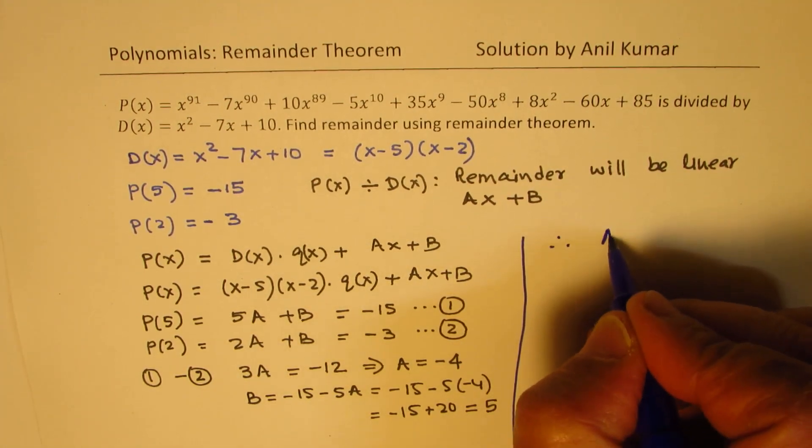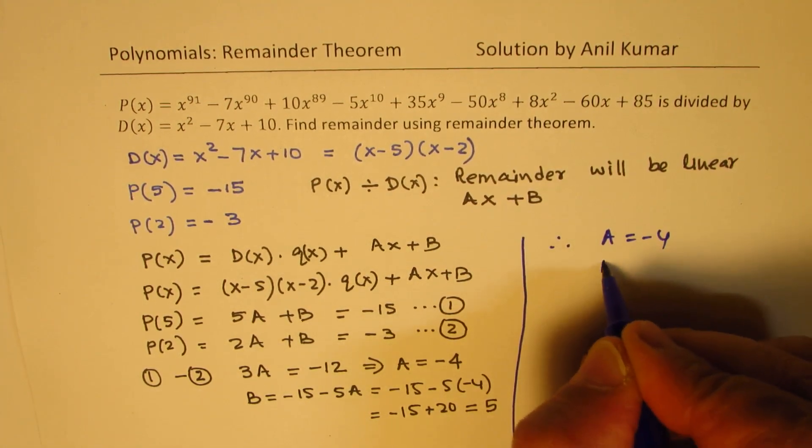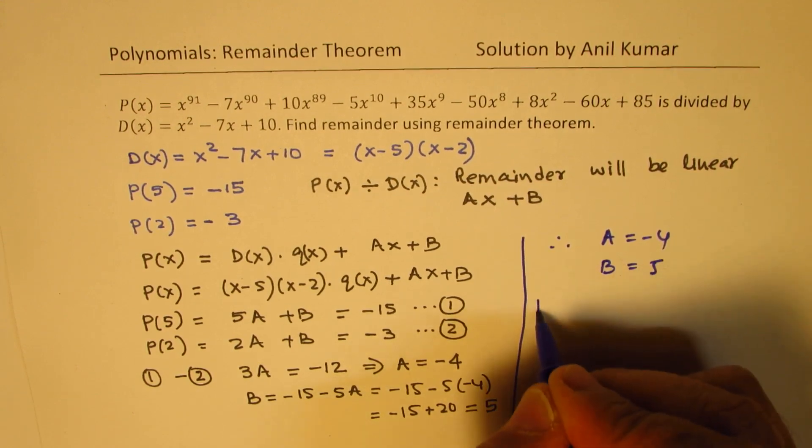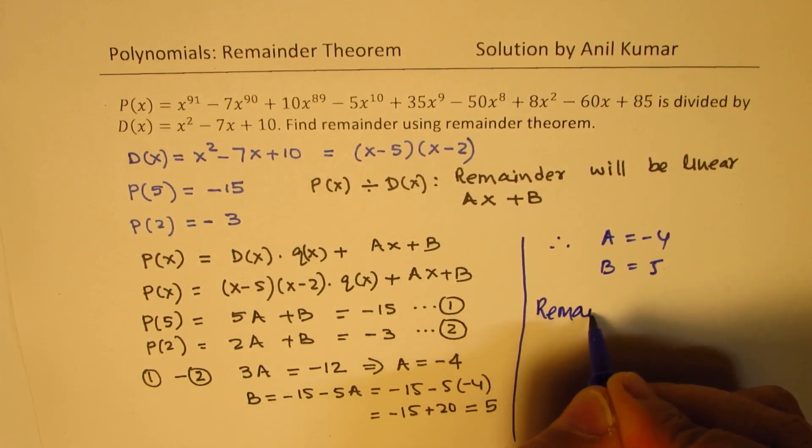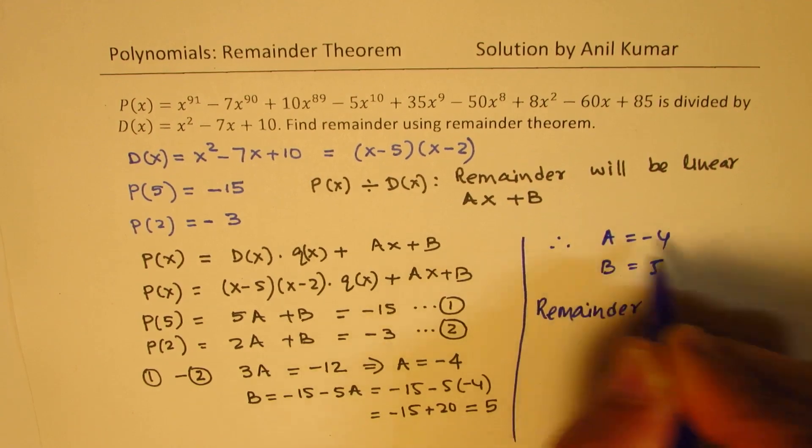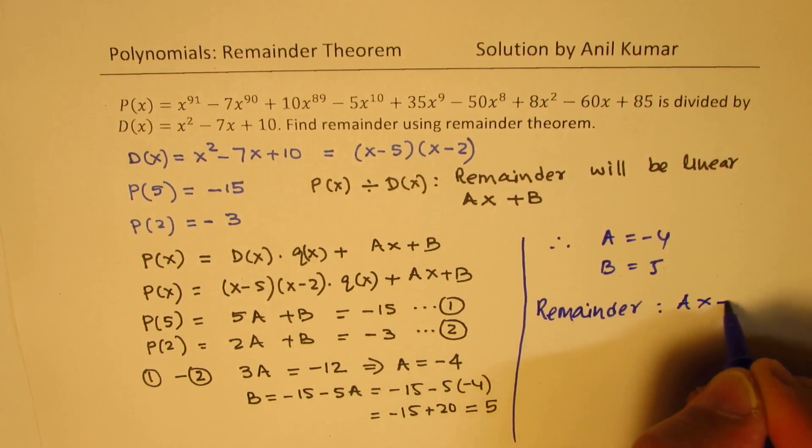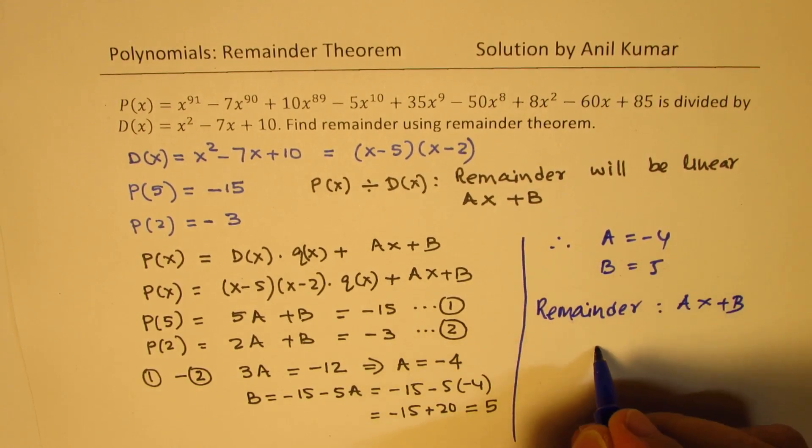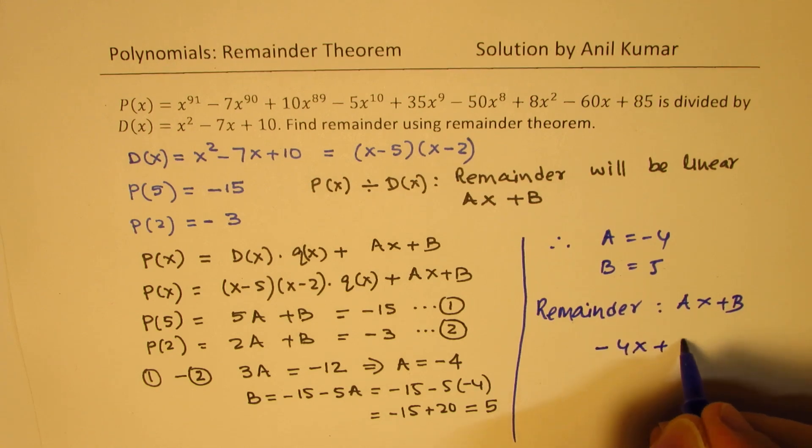And therefore, we know now A is minus 4, B is 5, and therefore the remainder is what? Ax plus B. So it is minus 4x plus 5.